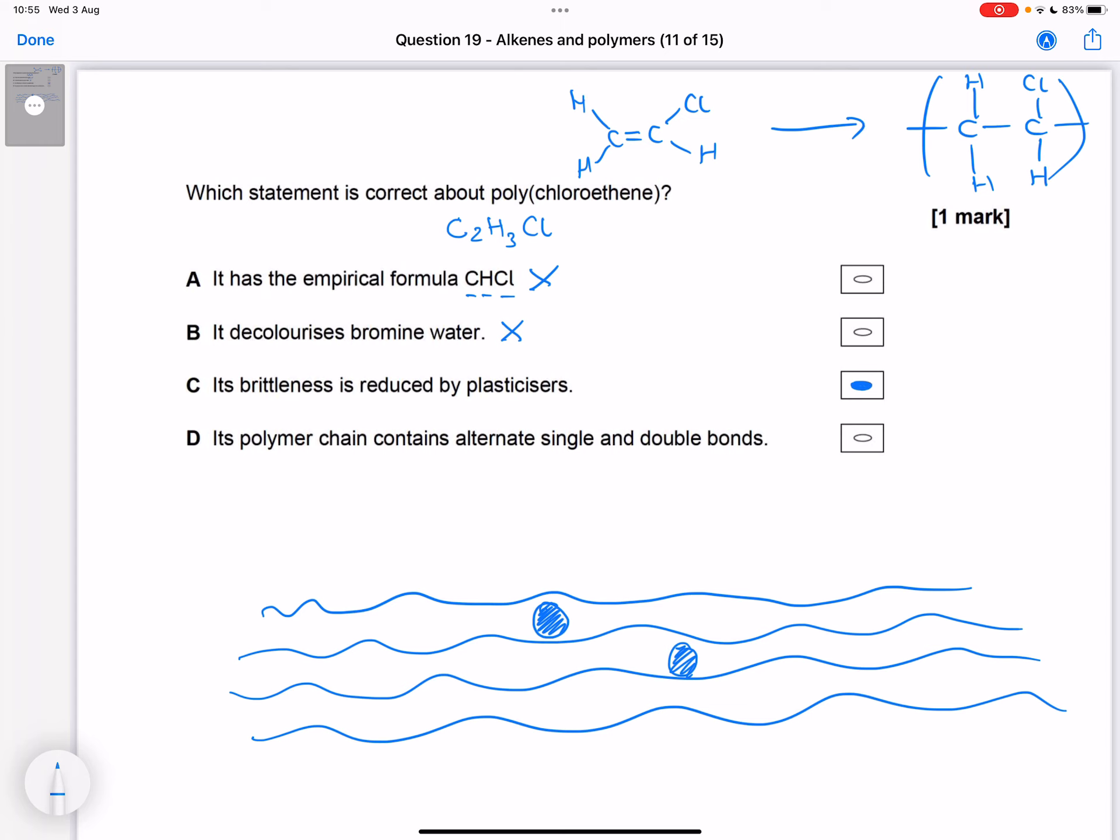Its polymer chain contains alternate single and double bonds - there's no double bonds in the polymer chain. So our answer is C.